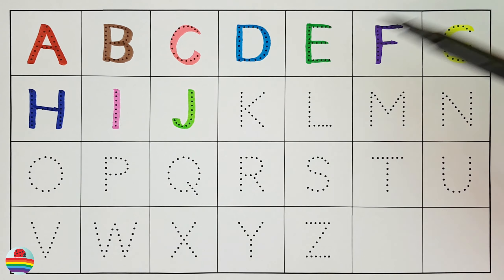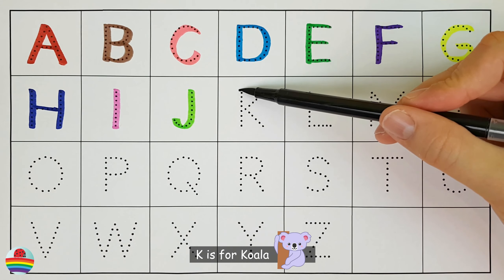I. I is for iguana. I. J. J is for jellyfish. J.